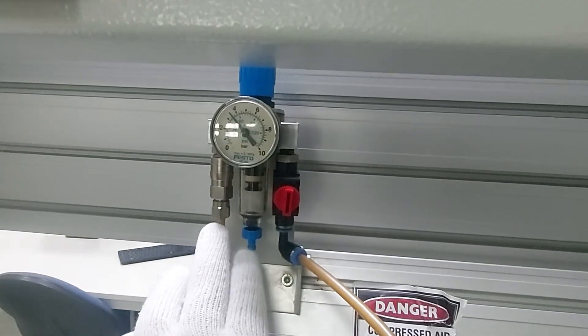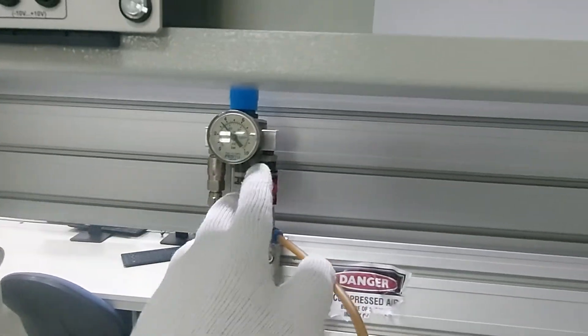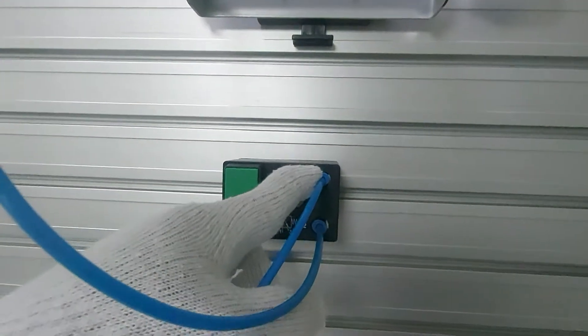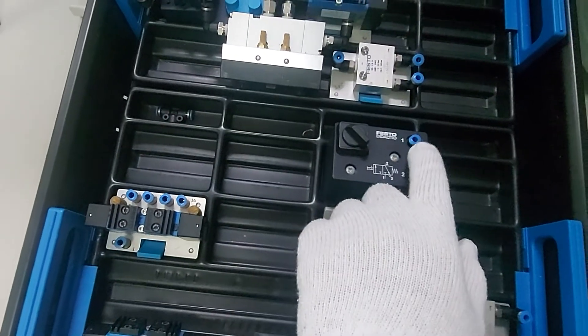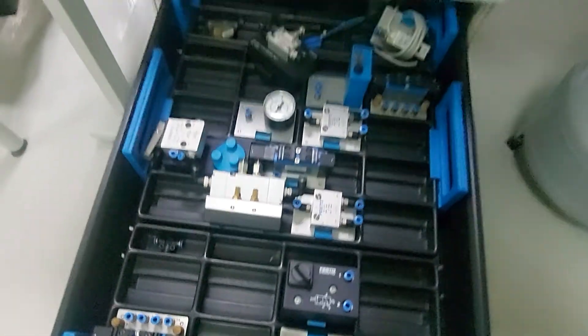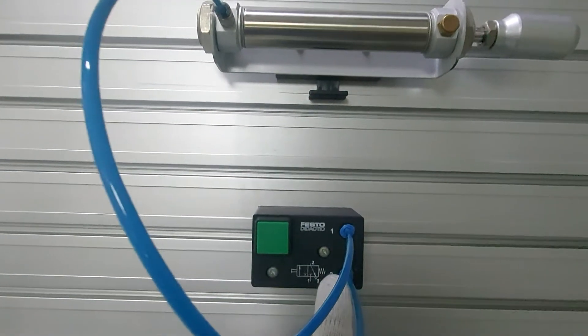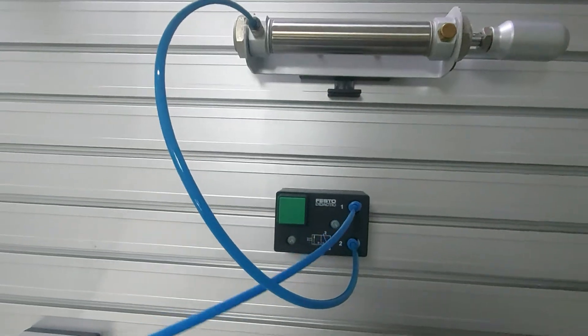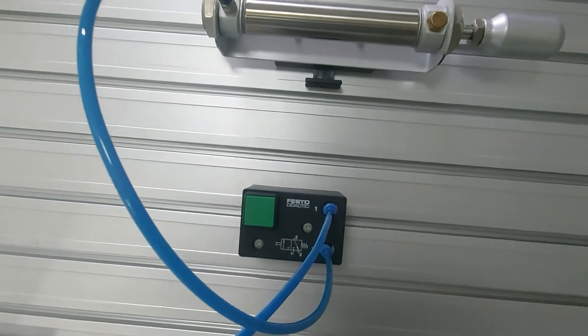This distributor is connected to FRL or air service unit. What is FRL? F is filter, R is pressure regulator, and L is lubrication. FRL is connected to distributor, and distributor is connected to one. Always whenever you see one, you connect it to distributor for any valve. Even numbers like two, four, six, eight, and so on, they will be output. Odd numbers like three and five will be exhaust. One is always input.